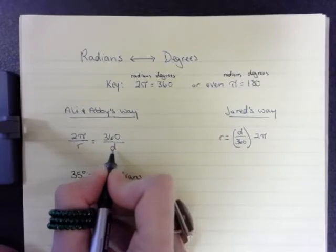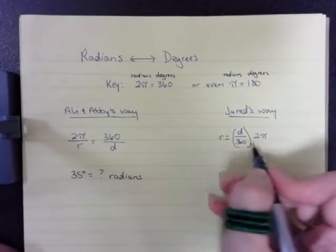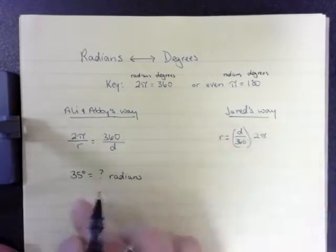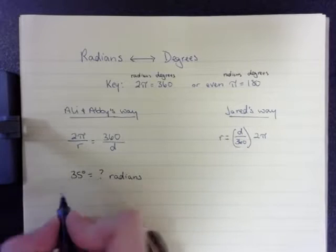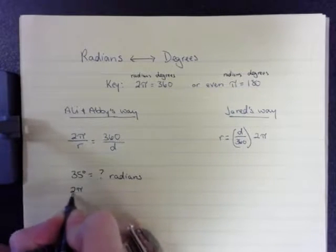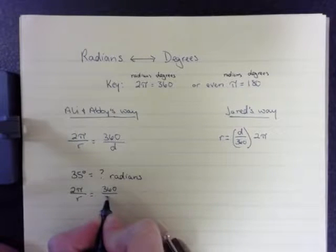Well, we know we have the degrees, so we can either put the d in here and solve this proportion, or put the d in here and solve this equation. Either way, you're going to get the same thing. So let's put the d in this one. 2 pi over r equals 360 over 35.